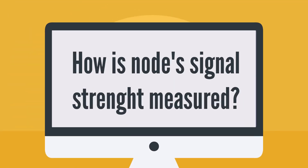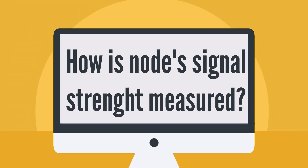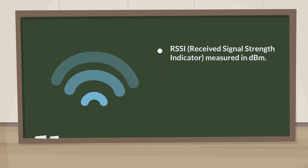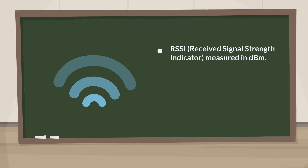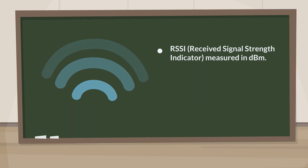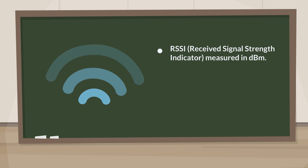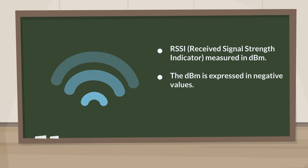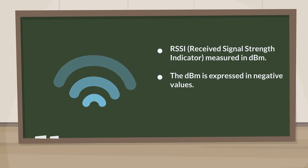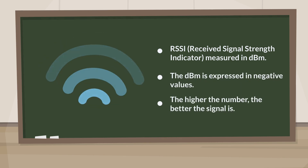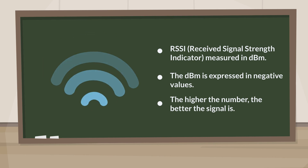How is a node's signal strength measured? Signal strength has an RSSI value measured in dBm, or decibels per milliwatt. The dBm is expressed in negative values, with the higher the number meaning the better the signal is.